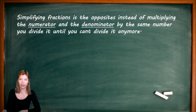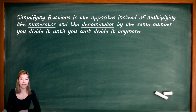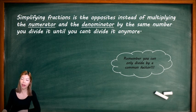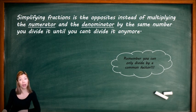Simplifying a fraction is the opposite. Instead of multiplying the numerator and the denominator by the same number, you divide it until you can't divide it anymore. You can only divide by a common factor — unlike going up where you multiply by any number. When you go down, shrinking the number, they have to fit, otherwise you're going to get an ugly decimal.